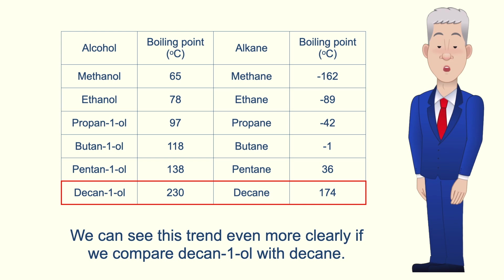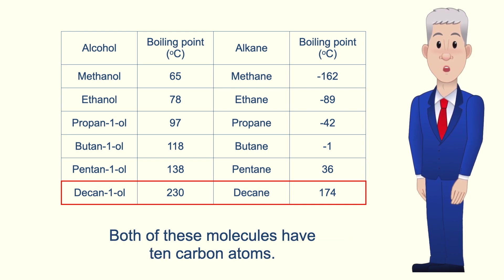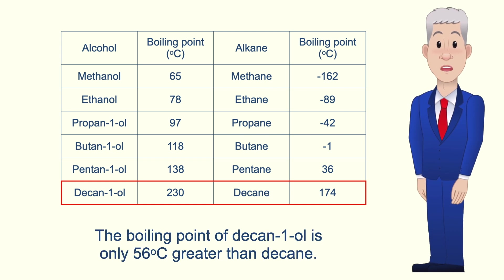We can see this trend even more clearly if we compare decan-1-ol with decane. Both of these molecules have 10 carbon atoms and the boiling point of decan-1-ol is only 56 degrees Celsius greater than decane.